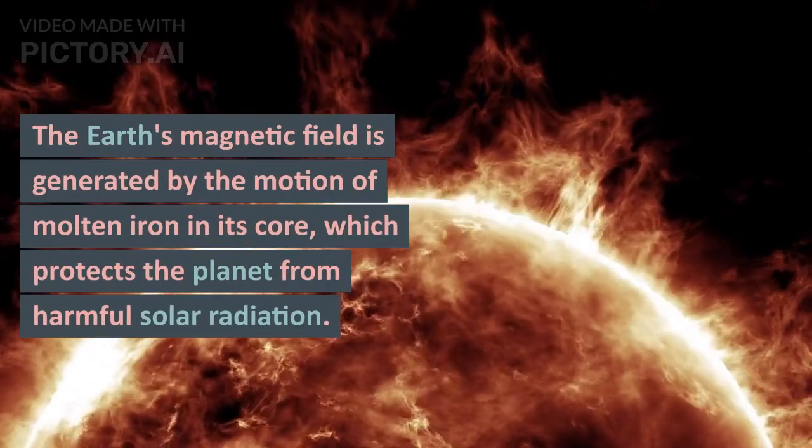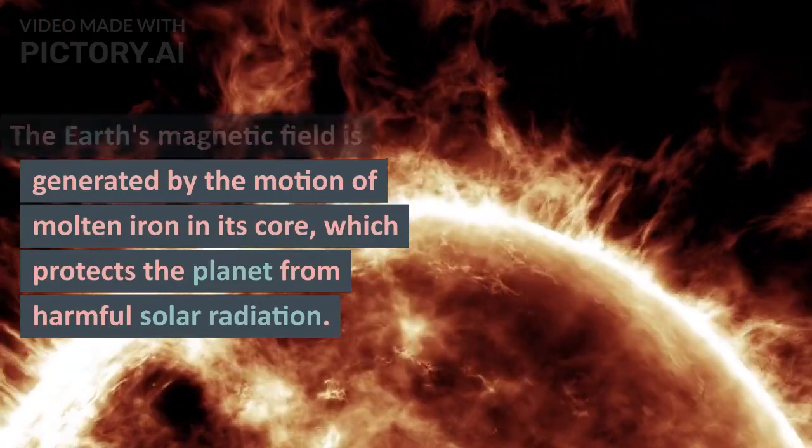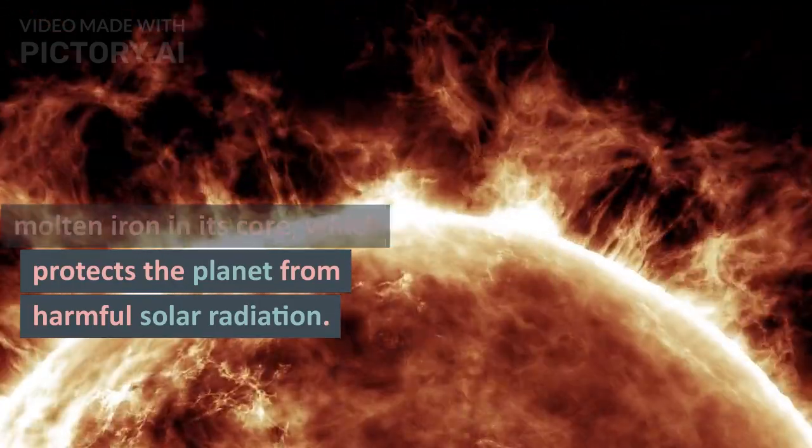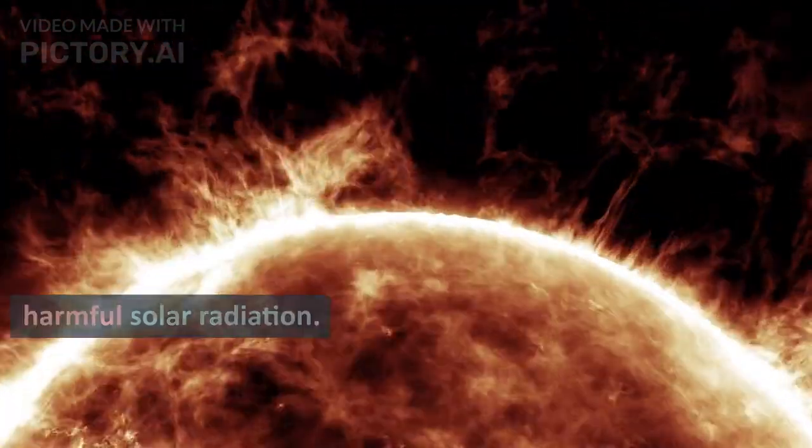The Earth's magnetic field is generated by the motion of molten iron in its core, which protects the planet from harmful solar radiation.